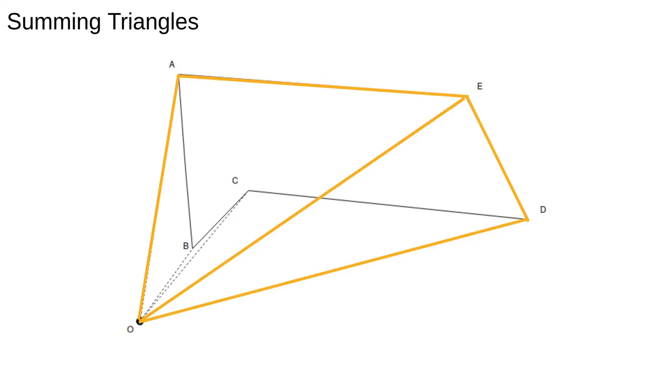For this polygon, the triangles OAE and OED encompass the entire thing plus some extra. The triangles OAB, OBC and OCD together give exactly this extra, and by subtracting them from the sum of the encompassing ones we're left with the area of the polygon.